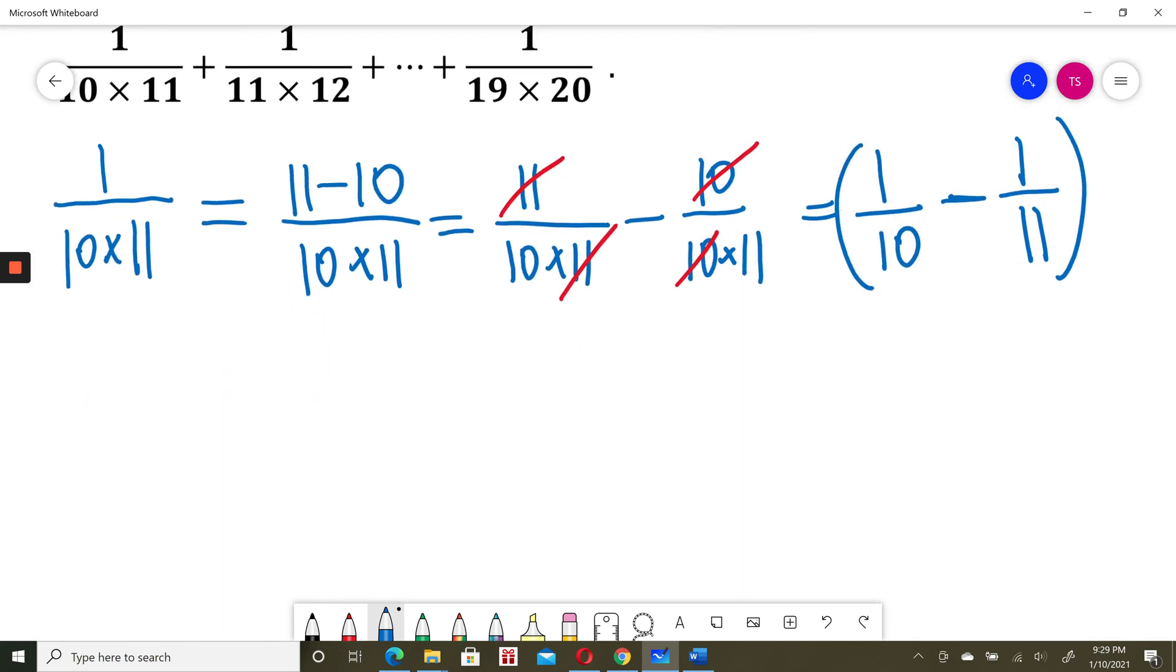Now I will just consider 1 over 11 times 12. I can write 1 as 12 minus 11.